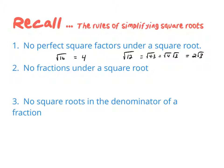We can't have any fractions under a square root. For example, if I had 16 over 9 under a square root, that wouldn't be simplified, because I'd be able to take the square root of the top and the square root of the bottom and get 4 over 3.